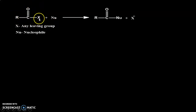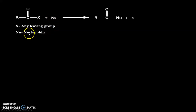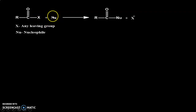Consider the general reaction: R-C(=O)-X. Here R is any alkyl group, C=O is the carbonyl group, X is any leaving group, and Nu stands for nucleophile. This carbon is electro-positive because it is attached to oxygen, so the flow of electrons is towards oxygen, creating a deficiency of electrons — a positive charge. X is a leaving group.